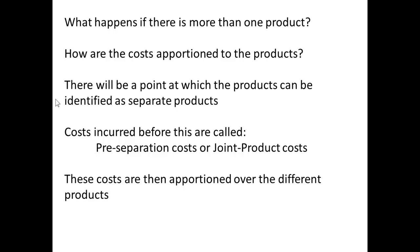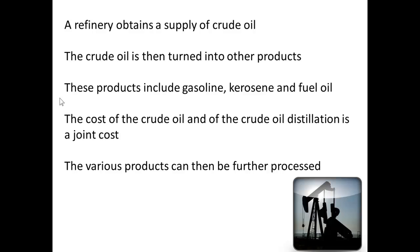So what happens with more than one product? How do we apportion the costs between the products? We look for a point at which the products can be identified as separate products. The costs incurred before that point are called the pre-separation costs, or joint product costs, and those are the costs that get apportioned over the different products.